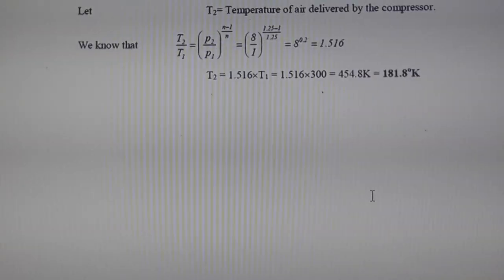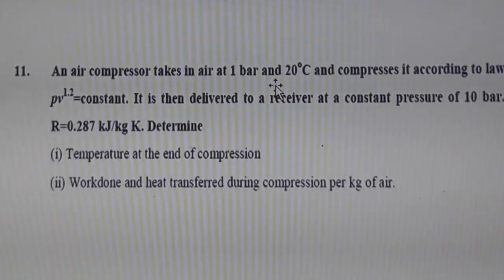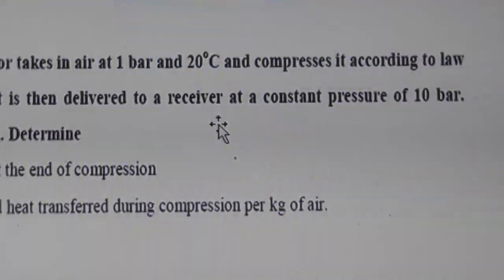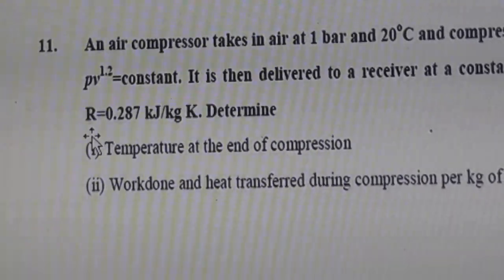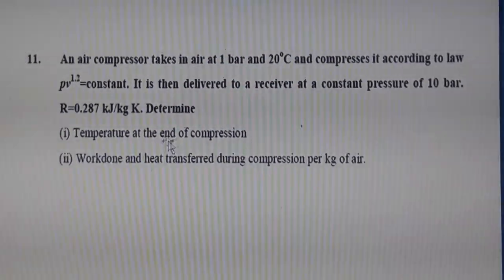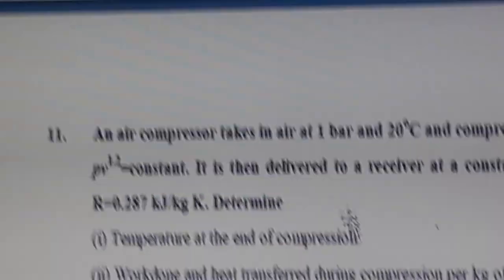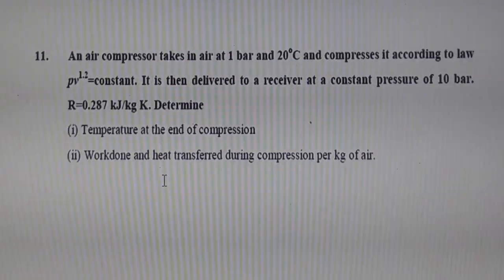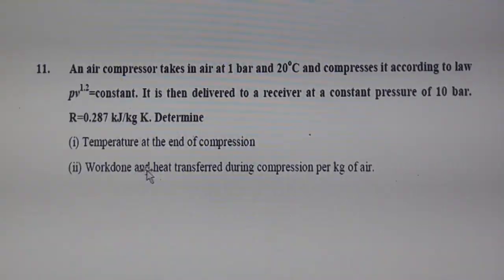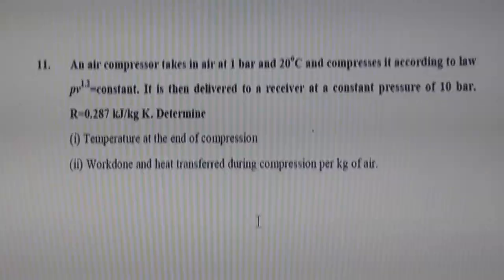Next numerical: An air compressor takes in air at 1 bar and 20°C and compresses it according to pv^1.2 = constant. It delivers to a receiver at a constant pressure of 10 bar. R = 0.287 kJ/kg·K. Determine: temperature at end of compression, work done, and heat transferred during compression per kilogram of air. The additional parameter here compared to previous numericals is the heat transferred.